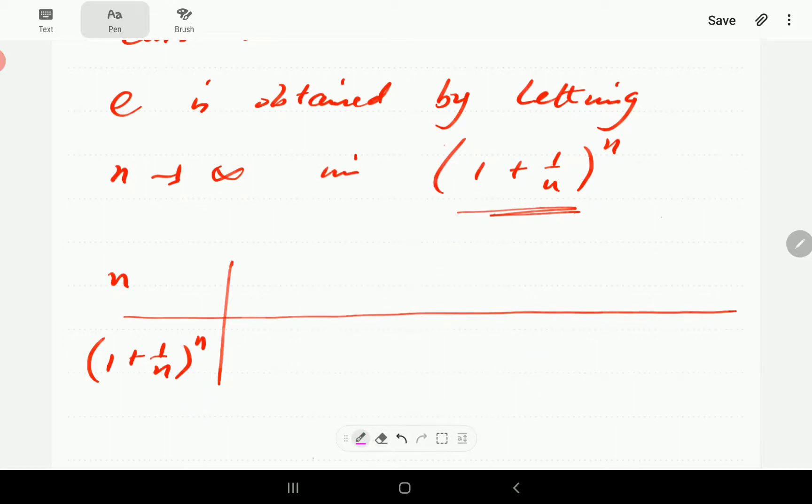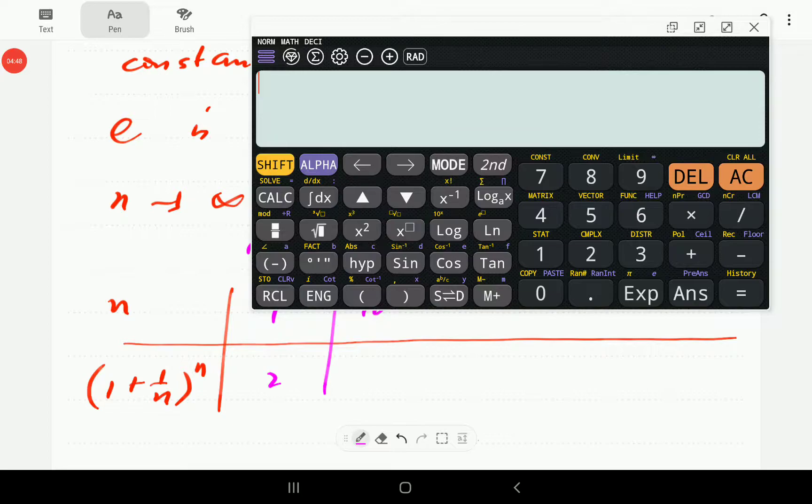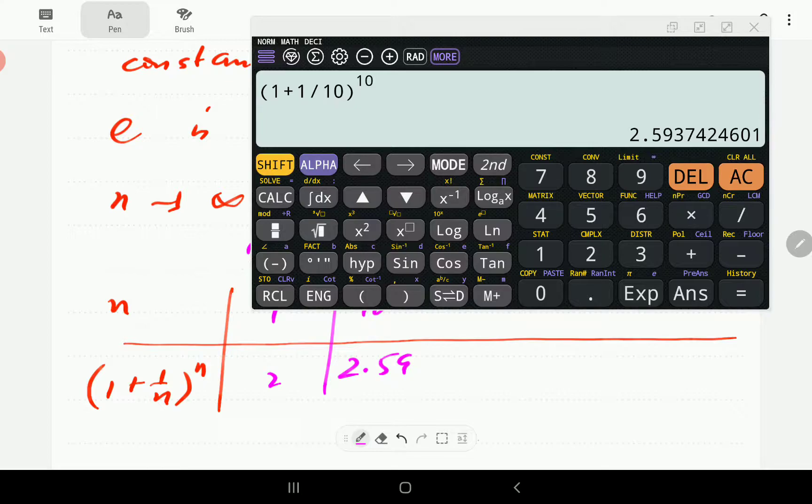Let's start with n equals 1. When n is equal to 1, this thing is going to be 1 plus 1 all to the power 1, so it's equal to 2. Then let's go to n equals 10. We're going to need a calculator for this. When n is 10, this thing is going to be equal to 1 plus 1 over 10, and then all raised to the power of 10. Correct to 4 decimal places, it's going to be 2.5937.